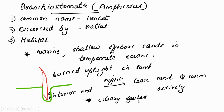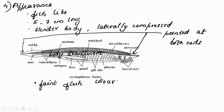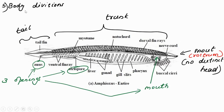Amphioxus is a ciliary feeder — it feeds by the beating of cilia to create water currents, taking in food particles present in the water as they move into its body. In appearance, it is fish-like, five to seven centimeters long, with a slender body that is laterally compressed and pointed at both ends. Its color is a faint flesh color.